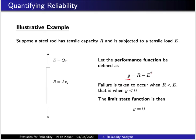Now whenever the load that it's required to hold is larger than the load that it can hold, G will be negative, and in that case we assume that failure has occurred. The limit state function is the condition where failure is reached — specifically when the performance function has a value of zero. Make sure you understand the difference between the limit state function and the more general performance function.